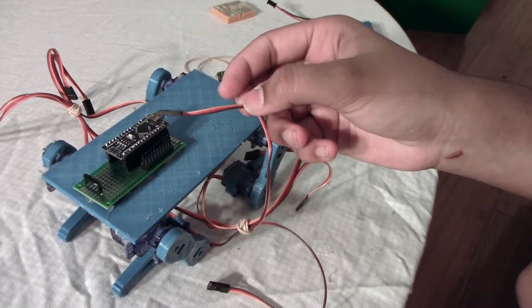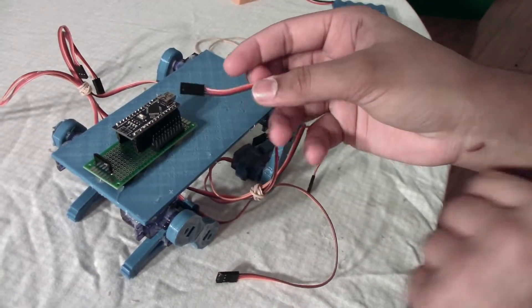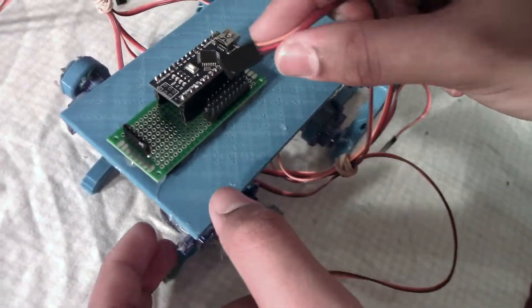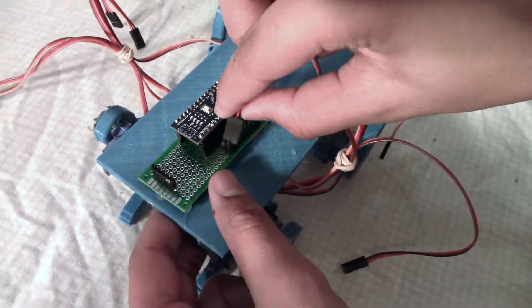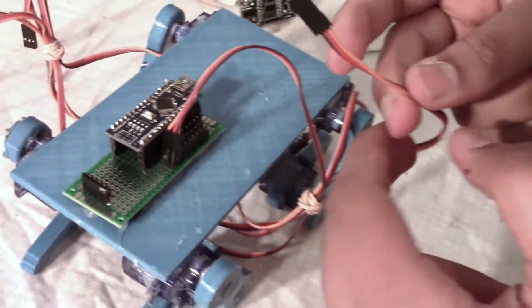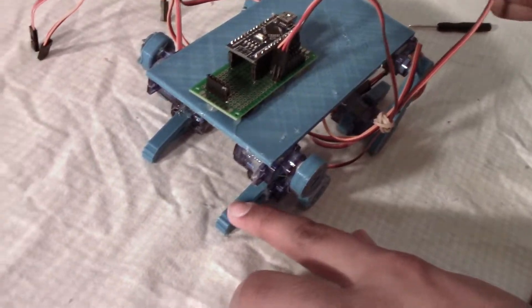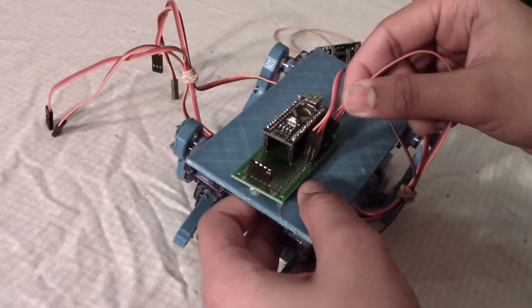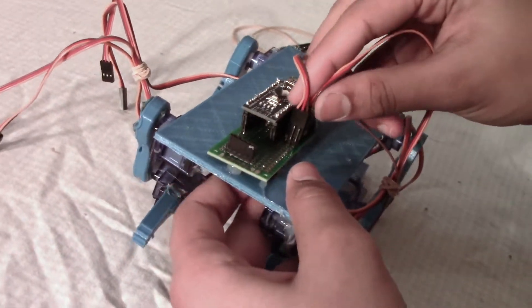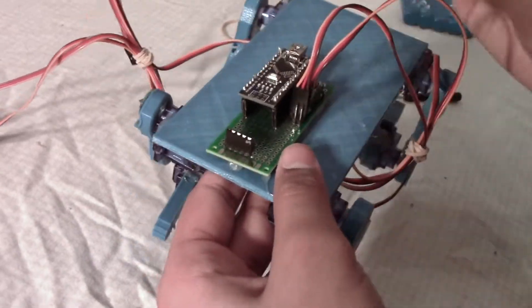So the first thing you do is connect servo number one onto digital pin number two. This is servo number one and this is the wire for it. It goes right over here on the digital pin number two. The next thing you have to do is connect servo number two, which is over here, onto digital pin number three, which is right behind digital pin number two. So this is leg one done.